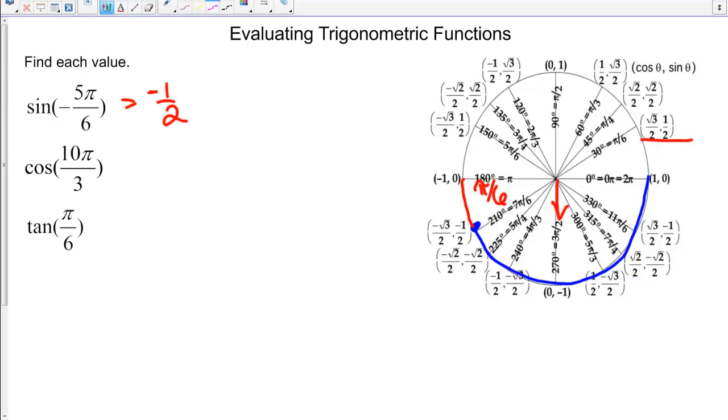Cosine of 10π over 3. We're going to go around: that's 3π over 3, 6π over 3, 9π over 3, plus one more π over 3. Our reference angle is π over 3. Find that in the first quadrant, and we have 1/2. We know that we are going in the negative x-direction at 10π over 3, so cosine of 10π over 3 is negative 1/2.